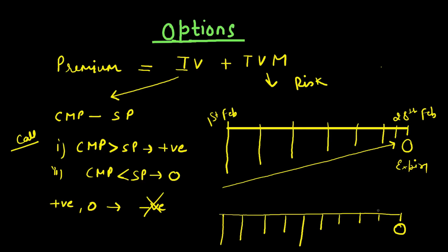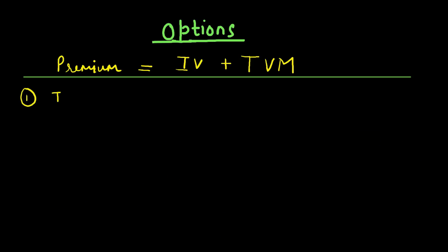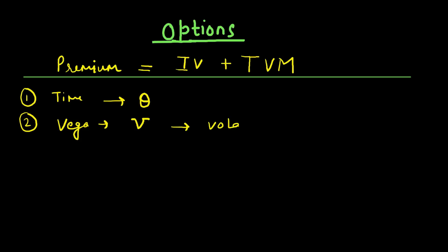That spike is because of other factors involved in the calculation of time value of money. As of now we have only spoken about the time factor, but in total there are four factors which affect the computation of time value of money. The first factor is time, which we have already discussed, and it is denoted as theta.